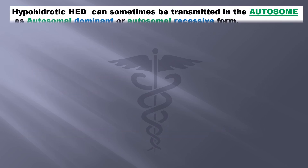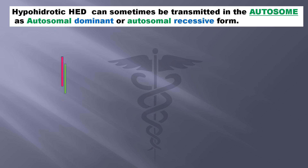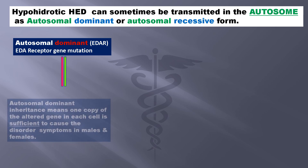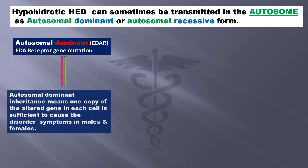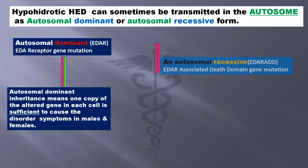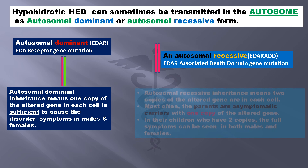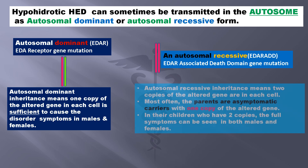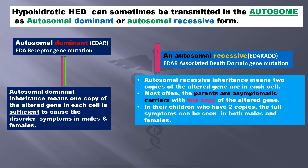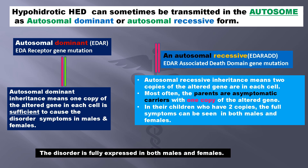Hypohydrotic ectodermal dysplasia can sometimes be transmitted via the autosomes as autosomal dominant or autosomal recessive form. Autosomal dominance occurs due to mutation of the ectodisplacin A receptor-associated dead domain gene, and one copy of the altered gene in each cell is dominant enough to cause symptoms in both males and females. In autosomal recessive condition, two copies of the mutated gene are present in each cell. Most often the parents are asymptomatic carriers with one copy of the altered gene, and in their children who have two copies, the full symptoms of this condition are seen, be it male or female. So this kind of autosomal transmission affects both males and females.